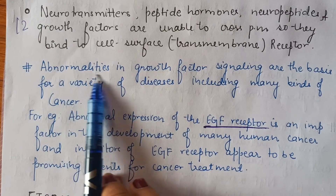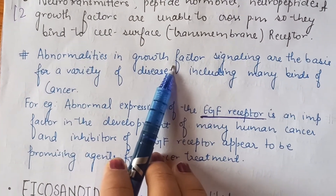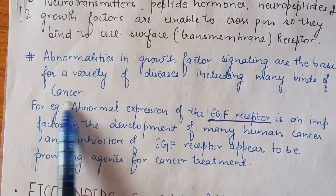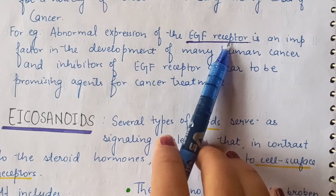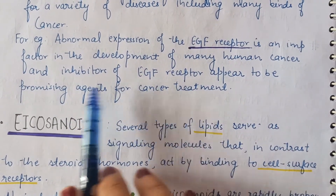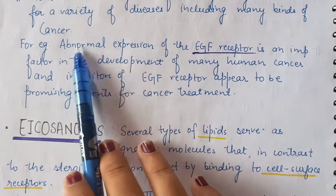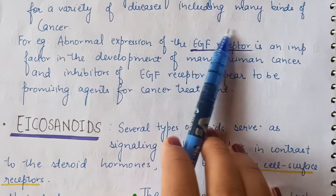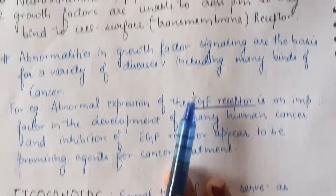Abnormalities in growth factor signaling are the basis of a variety of diseases including many kinds of cancer. If growth factor signaling is malfunctioning, different types of cancers can develop. For example, abnormal expression of the epidermal growth factor (EGF) receptor can lead to many human cancers. Inhibitors of EGF receptors appear to be promising agents for cancer treatment — by inhibiting the abnormal receptor, cancer development can potentially be controlled.